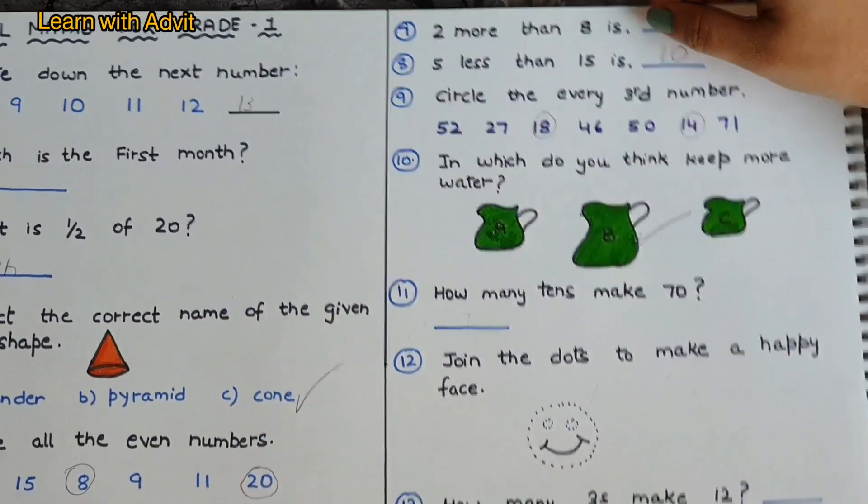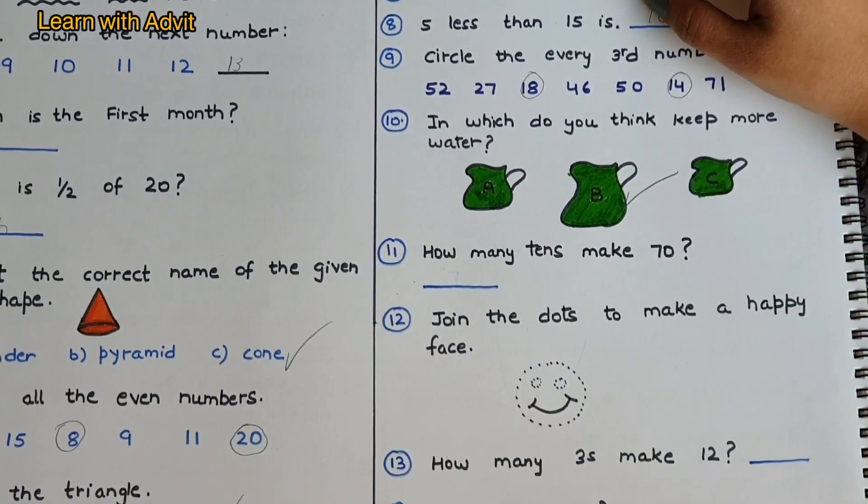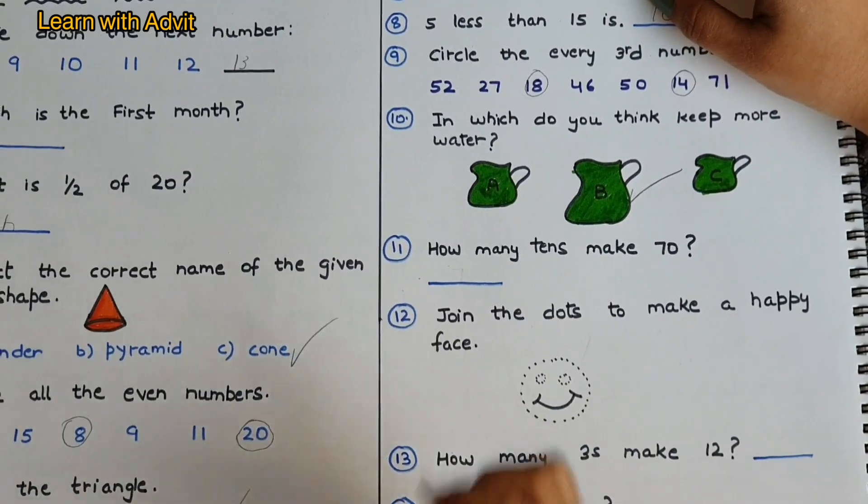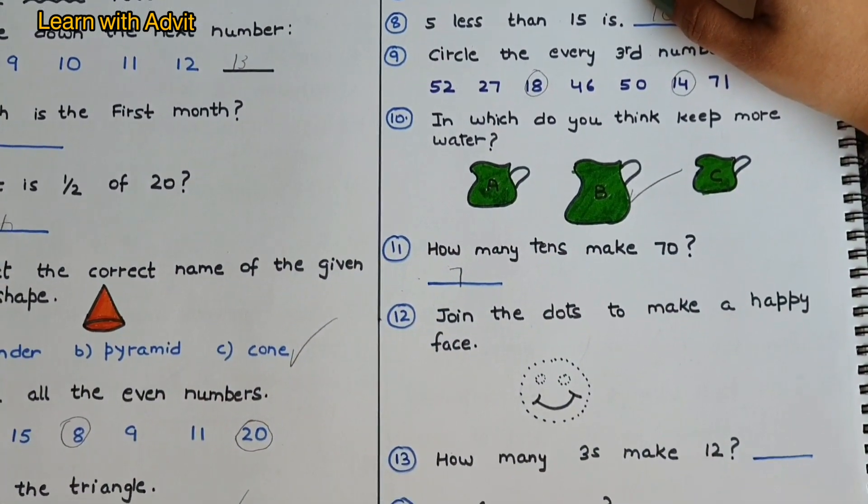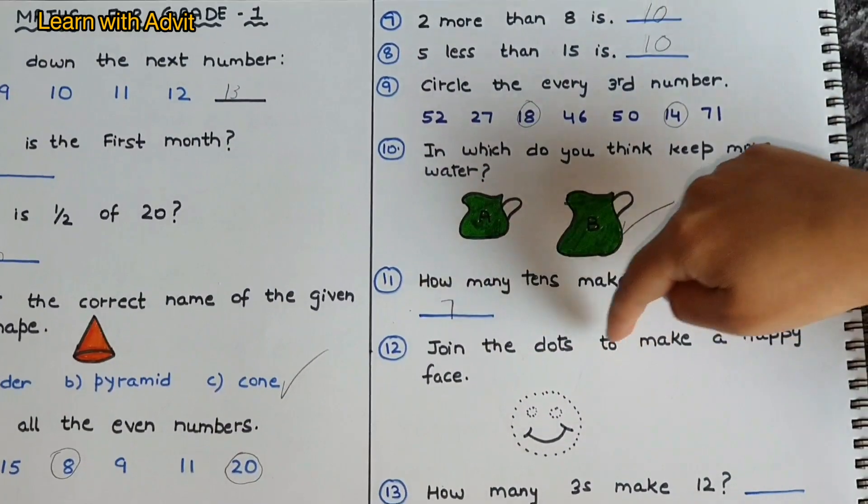How many tens make seventy? Seven, yeah. How many tens make fifty? Five, very good.